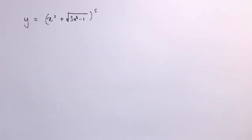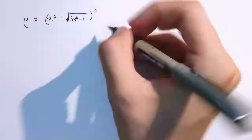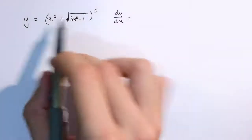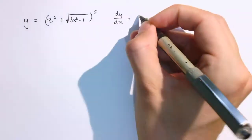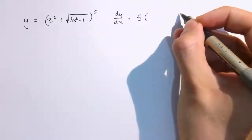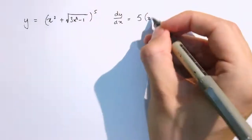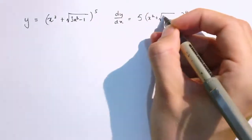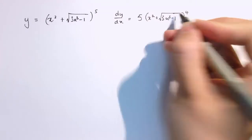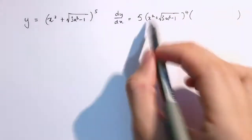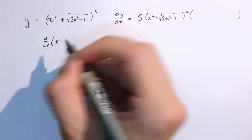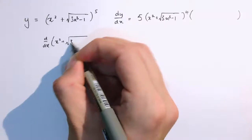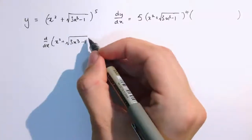Here's another example. To find dy by dx using the chain rule, where the outermost function is something to the power of 5, I differentiate that and get 5x to the 4, but the something isn't just x — it's x squared plus the square root of 3x cubed minus 1. To complete this, I need to multiply by the derivative of this inside bit, so I need to work out d by dx of x squared plus the square root of 3x cubed minus 1.